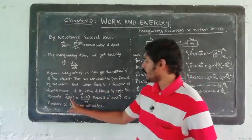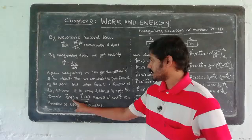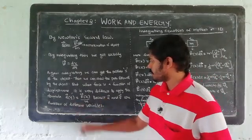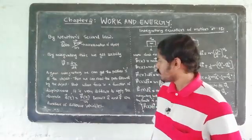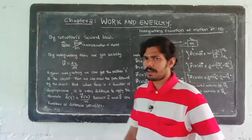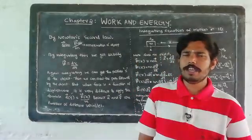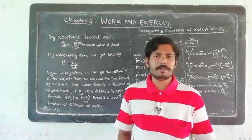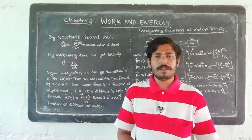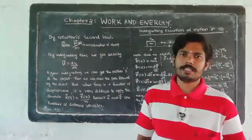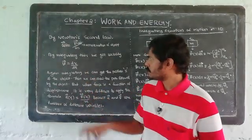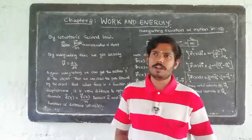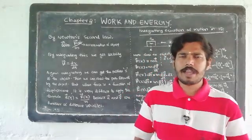It is very difficult to apply the formula a(t) = F(x)/m, because acceleration is a function of time while force is a function of displacement — two different variables. This is the problem with Newtonian mechanics methods. However, if we follow a different approach and consider force as a function of displacement, we will be able to solve it.